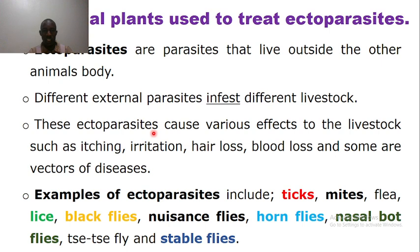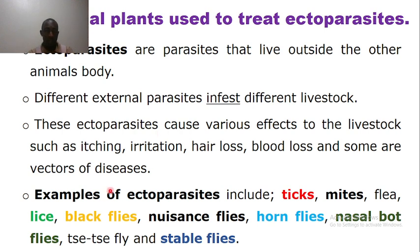Ticks live outside the animal body. We also have lice, fleas, nasal botfly larvae that live inside the nostrils, and the tsetse fly, which causes blood sucking and vectors trypanosomes — causing trypanosomiasis. Other external parasites include the stable fly and housefly, which affect animals that are always grazing.